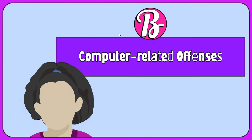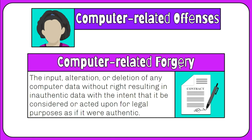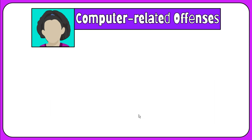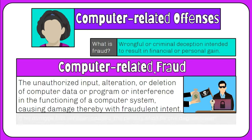The next core category of cybercrime is computer-related offenses. The first one is computer-related forgery — the input, alteration, or deletion of any computer data without right resulting in inauthentic data with the intent that it be considered or acted upon for legal purposes as if it were authentic. Second, computer-related fraud is the unauthorized input, alteration, or deletion of computer data or program, or interference in the functioning of a computer system causing damage thereby with fraudulent intent.